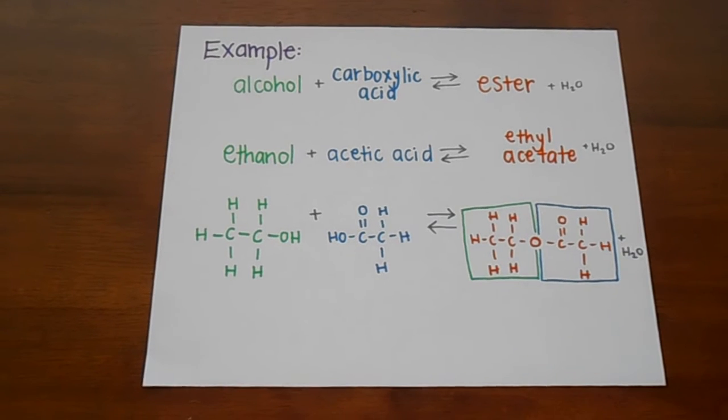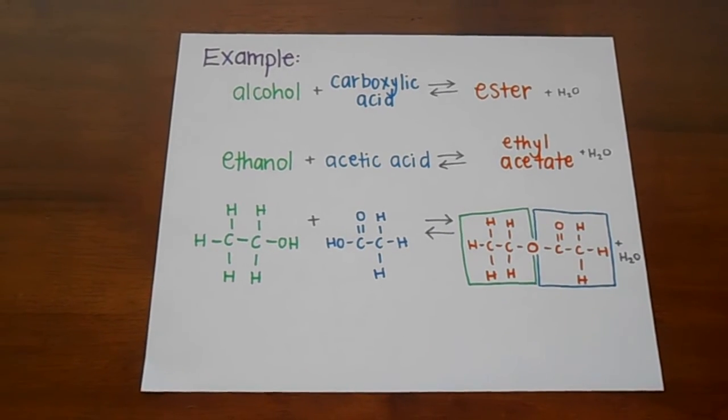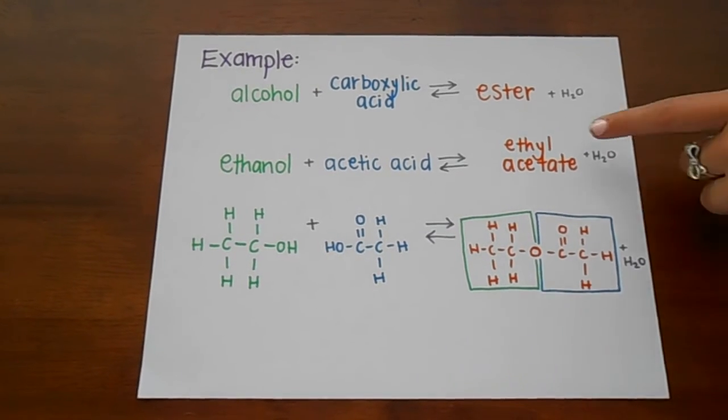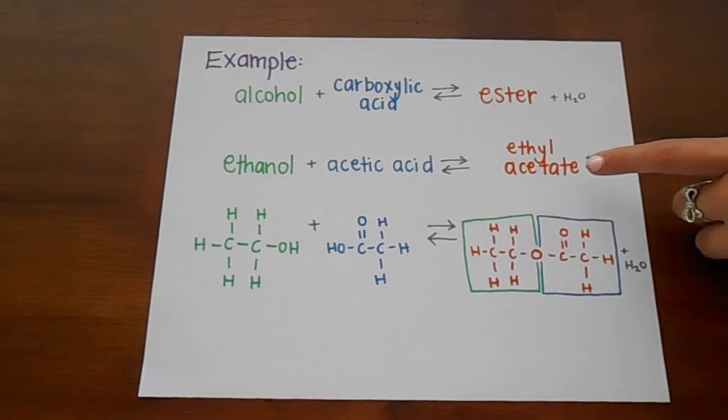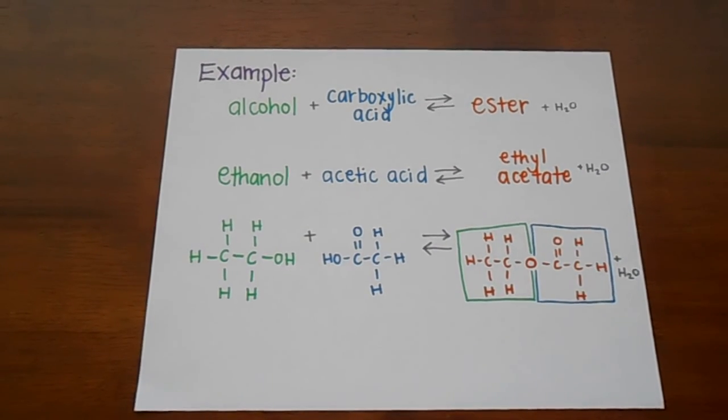Now I'll go back and show you the ester's name. When you have combined the alcohol and the carboxylic acid, they will get new endings. It will end with YL and ATE. So the new name of the ester is ethyl acetate.